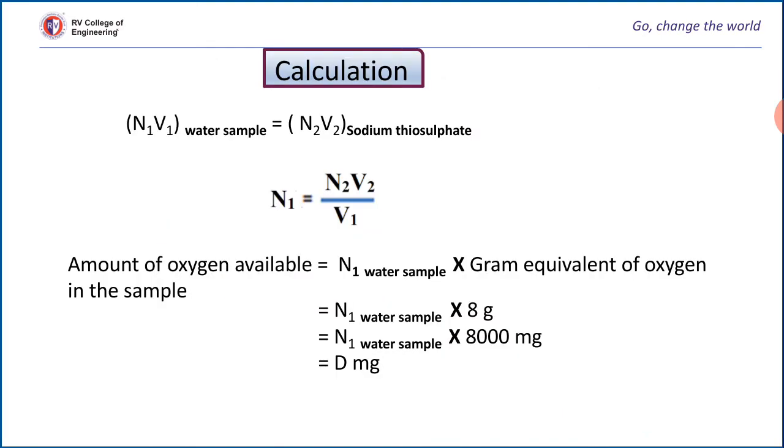We can calculate the amount of oxygen present in the water sample by using these steps. By using law of volumetry, we can calculate the strength of the water sample. Amount of oxygen present in the water sample can be calculated by multiplying strength with the gram equivalent weight of oxygen. Finally, we have to convert into milligrams.